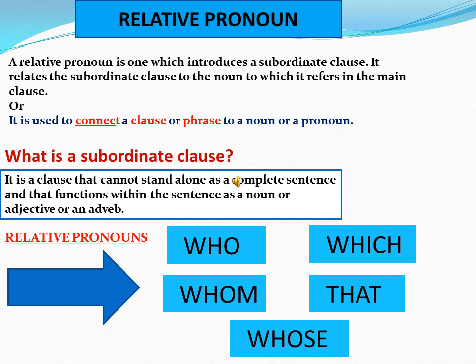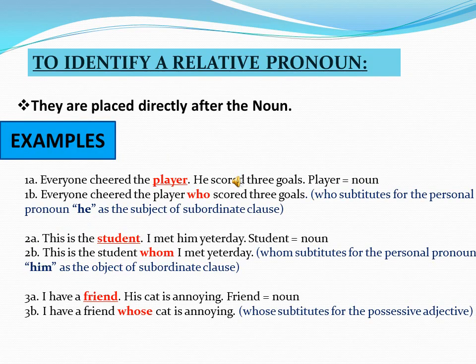You need to focus on Relative Pronouns. There are five Relative Pronouns: Who, Whom, Which, That, and Whose. For a better understanding of how to identify a Relative Pronoun — as you can see on your screen — they are placed directly after a noun. That means we always have a Relative Pronoun following a noun.